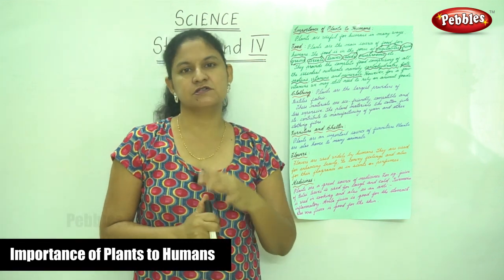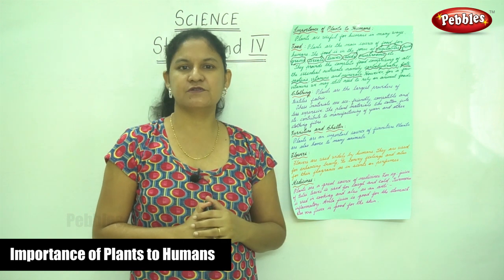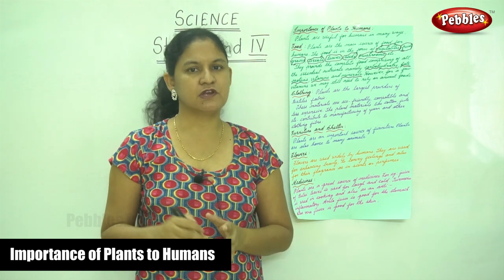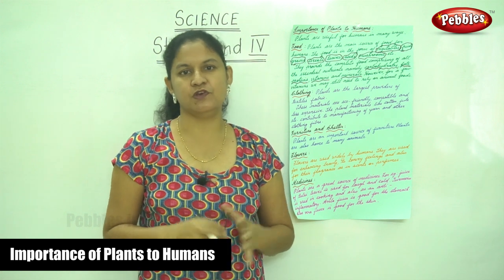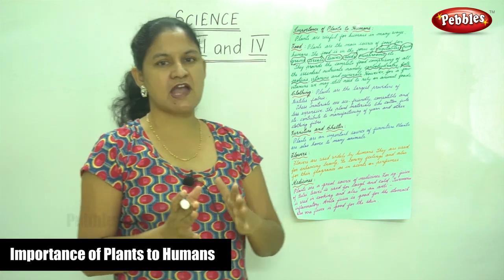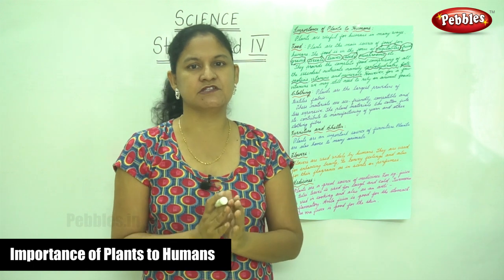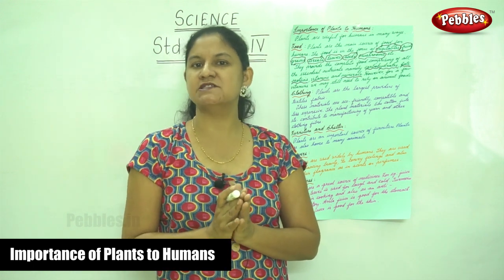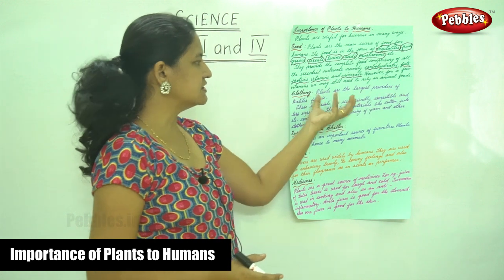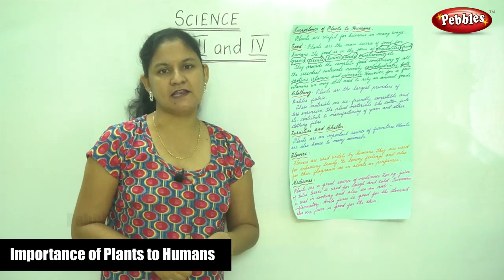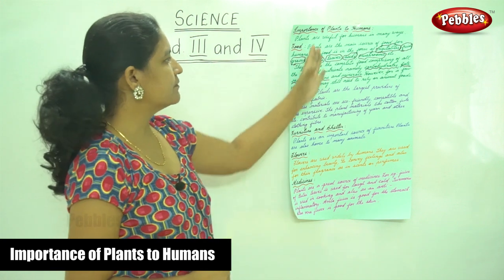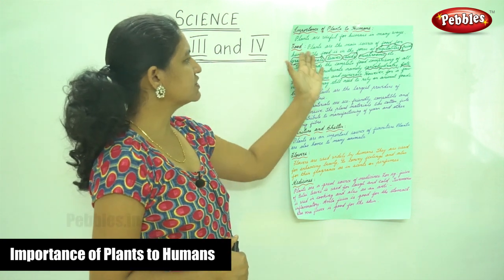Not all vitamins are present in plants; we have to rely on animal food for some nutrients. When we have both plants and animals in our diet, we call it a balanced diet. The most important part remains food — plants provide humans with the necessary food.